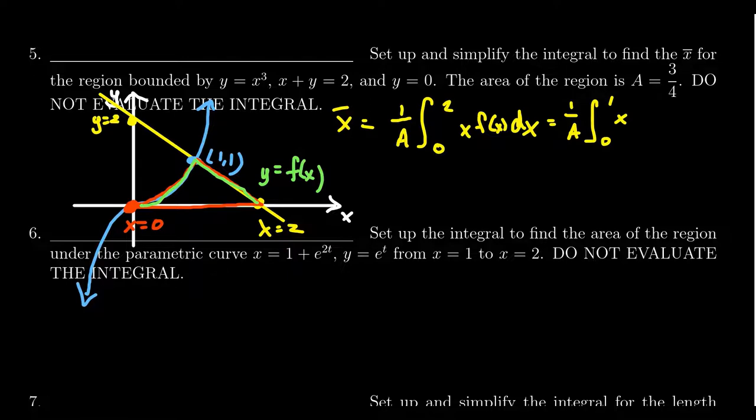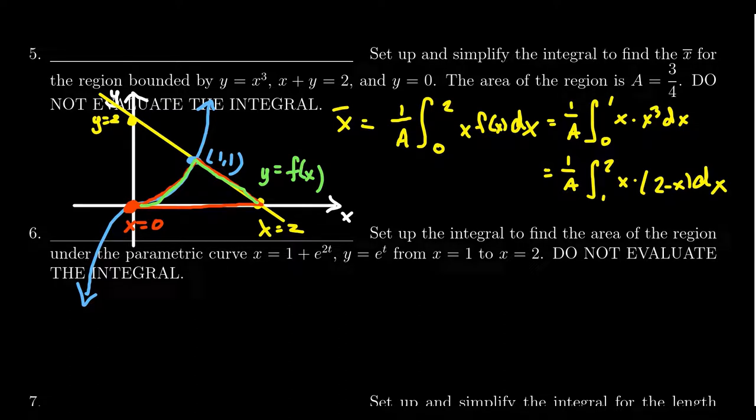So you're going to get one over A times the integral from zero to one of x times... Now in this situation, f of x is the function x cubed. And then we have the other one, one over A times the integral from one to two. And this time, our function is going to be what we had before, two minus x. That's the line in that situation.